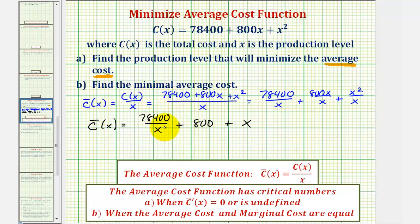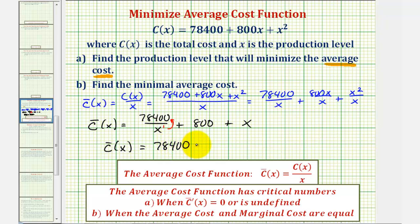Notice here we have x to the first in the denominator, so if we move this up to the numerator, it would change the sign of the exponent. So we can also write the average cost function as 78,400 x to the power of negative one, plus 800 plus x. We'll find the derivative function on the next slide.